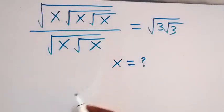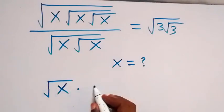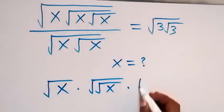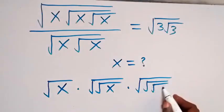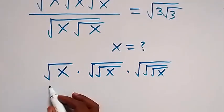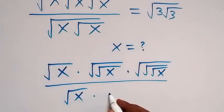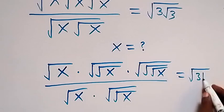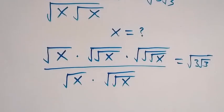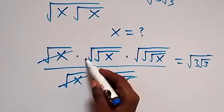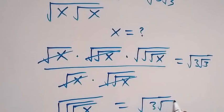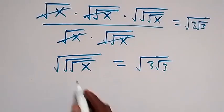Using the second method, we separate the expression: the numerator has root x times root of root x — which contains two roots — times x under three roots. The denominator has root x, then the second term containing two roots. This equals root 3 then root 3 inside. Root x cancels with root x, and we are left with the square root of square root of square root of x equals root 3 times root 3.